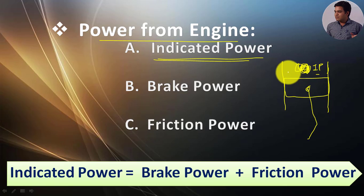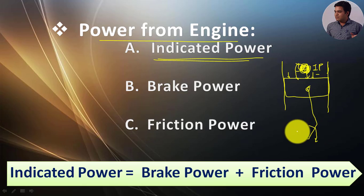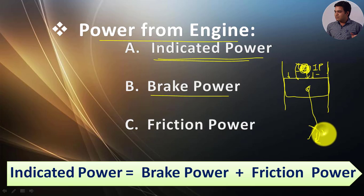With the help of this indicated power, the hot flue gases push the piston in the downward direction and we get actual work at the crankshaft at the bottom. So brake power is what we get at the crankshaft, which is the actual power that we can utilize to run our vehicle.